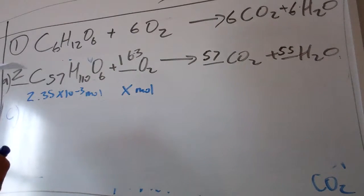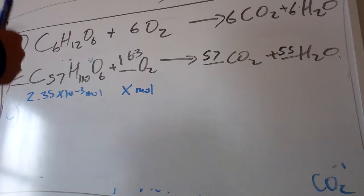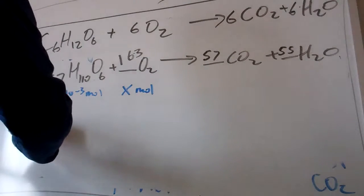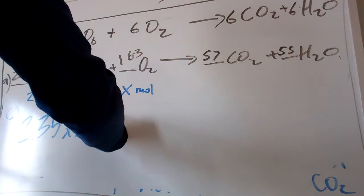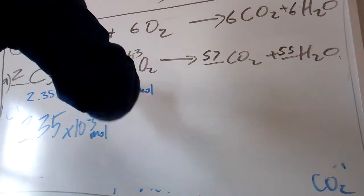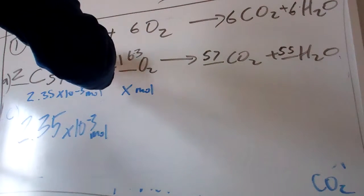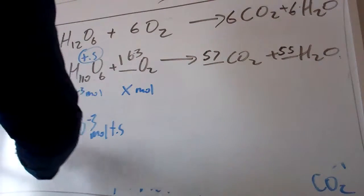We start out with the units that they give us: 2.35 times 10 to the negative 3 moles of—you know what, to make you happy, we'll call this TS, tristerine, just so we don't have to write it all out. Okay, moles of TS.